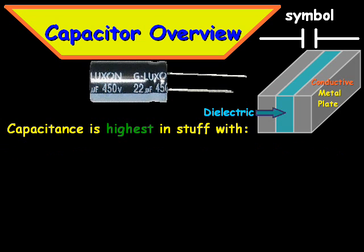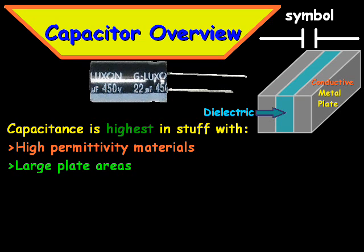Capacitance is highest with higher permittivity materials, so high permittivity means higher capacitance. Larger plate areas also mean more capacitance — the larger the plate, the more capacity. And then of course a smaller distance between the plates increases capacitance as well.